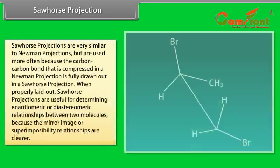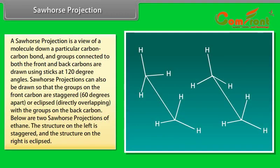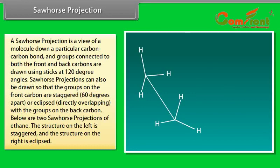Sawhorse projections are very similar to Newman projections but are used more often because the carbon-carbon bond that is compressed in a Newman projection is fully drawn out in a sawhorse projection. When properly laid out, sawhorse projections are useful for determining enantiomeric and diastereomeric relationships between two molecules because mirror image or superimposability relationships are clearer. Like Newman projections, a sawhorse projection is a view of a molecule down a particular carbon-carbon bond, and groups connected to both the front and back carbons are drawn using sticks at 120° angles. Sawhorse projections can also be drawn so that the groups on the front carbon are staggered 60° apart or eclipsed directly overlapping with the groups on the back carbon. These are the simplest sawhorse projections because they have only two carbons and all of the groups on the front and back carbons are identical.